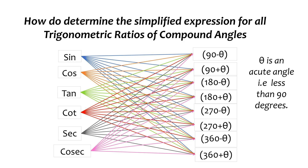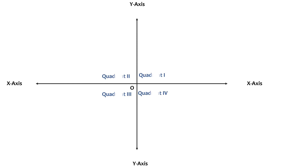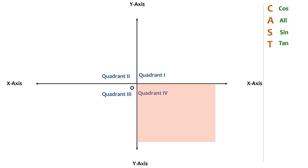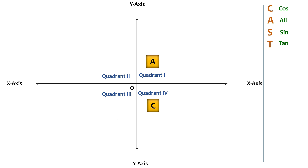Let's draw the x-axis and y-axis to represent the four quadrants: first, second, third, and fourth. We are going to remember the word CAST — the first letter C represents cos, the second letter A represents all, the third letter S represents sine, and the fourth letter T represents tan. We start with the fourth quadrant and write C there, then move in the anticlockwise direction: A in the first quadrant, S in the second, and T in the third.